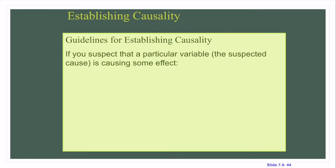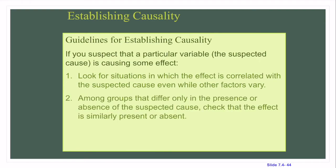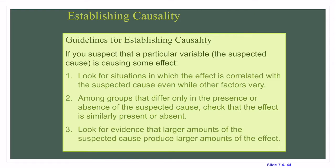If you suspect that a particular variable is causing some effect, look for situations in which the effect is correlated with the suspected cause, even while other factors vary. Among groups that differ only in the presence or absence of the suspected cause, check that the effect is similarly absent or present. Also look for evidence that larger amounts of the suspected cause produce larger amounts of the effect.